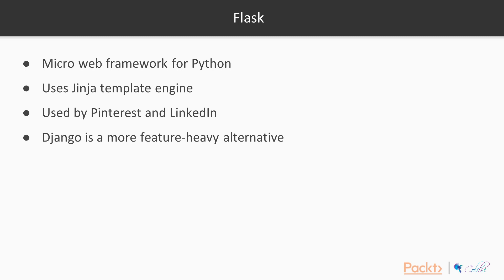Flask uses the Jinja template engine. This provides the ability to use Python-like expressions to generate HTML. For example, you can inject values from Python variables. You can use for loops, if and else statements, and so on. We'll be seeing a small example of this later.